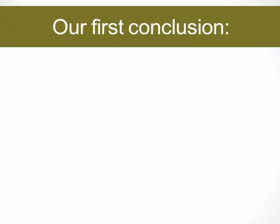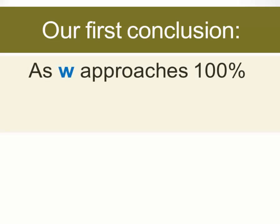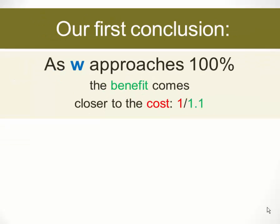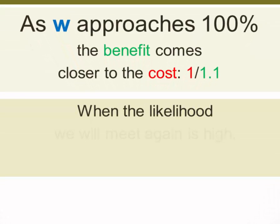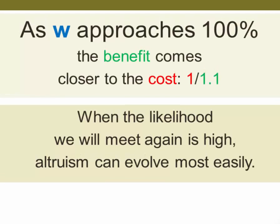This lets us draw a conclusion. As we went from 50% to 90%, the cost and the benefits came much closer together. And we can say that as W approaches 100%, as it gets closer to 1, the benefit comes closer to the cost. We can interpret this to mean that when the likelihood we will meet again is high, altruism can evolve more easily, and that's because the cost-benefit ratio is so close. That's a fairly intuitive idea that it's going to be easier for reciprocators to benefit one another if they meet frequently.